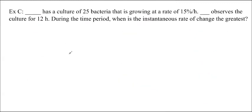Okay, one more question. Let's say Alice has a culture of 25 bacteria that is growing at a rate of 15% per hour. She observes the culture for 12 hours. During that time period, when is the instantaneous rate of change the greatest? Okay, so this question is not a trick question, but we could solve this in a smarter way by actually graphing it. So if we graph this, we know that if we just write this out, the growth or the population starts with 25.